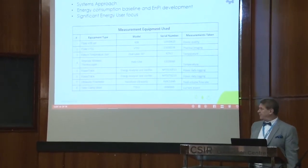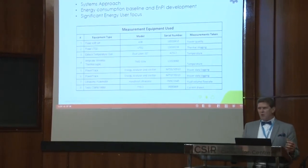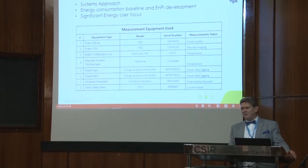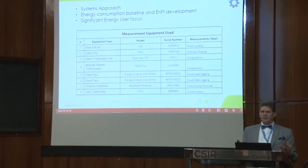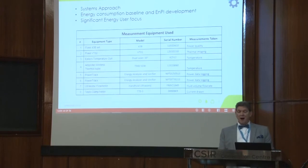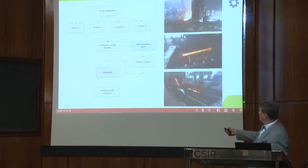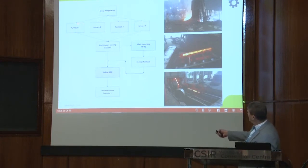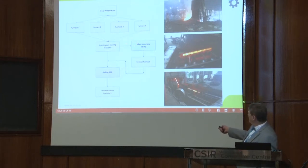We took along a range of equipment — predominantly power quality analysers, power data loggers, and thermal imaging cameras — because we needed to capture how they were using power. The process essentially saw a lot of scrap being fed via magnetic hoist into induction furnaces, then into a continuous casting machine, a rolling bolt, and ultimately finished rebar. There was also a side process where from the billet inventory we had a reheat furnace with that same process.